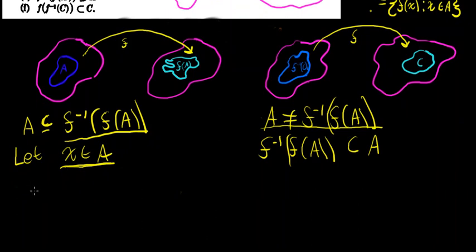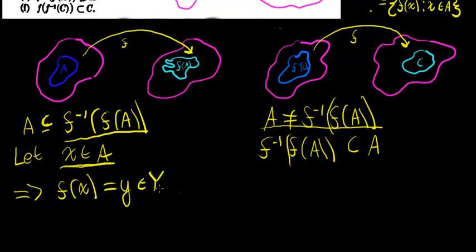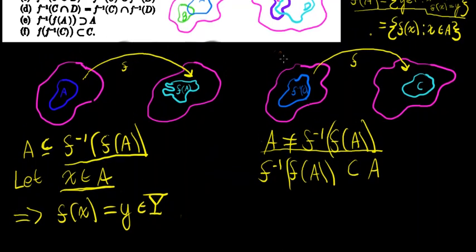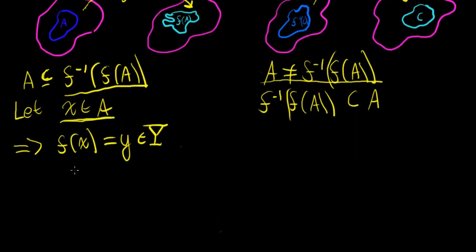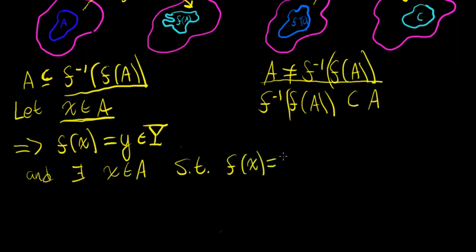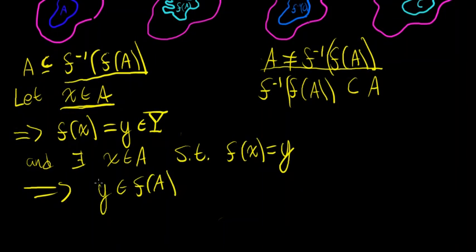Let x be in A. This implies that f(x) equals some y in the set Y. Now let's remember what the image of A under f is: it's exactly the set containing all y in Y such that there exists an x in A such that f(x) = y. And look at what we have here — f(x) is equal to y, and there exists an x in A such that f(x) = y. This implies that y is in f(A).